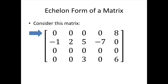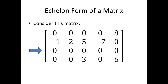In the first row, the first non-zero entry is that 8 all the way over on the right-hand side. In the next row, the leading entry is the negative 1 right at the beginning of the row. The third row doesn't have a leading entry — all of the entries in that third row are 0. And in the fourth row, the leading entry is a 3. Notice that other entries in the row can be 0; we're just looking for the first non-zero entry going from left to right.